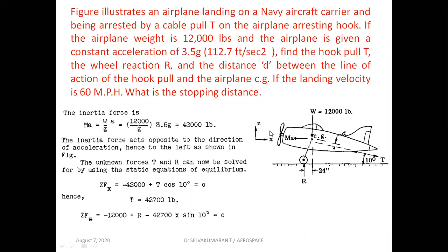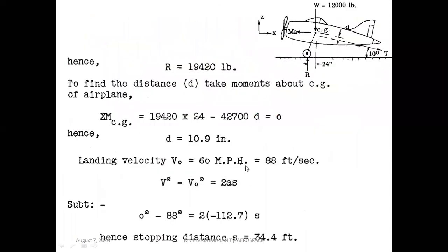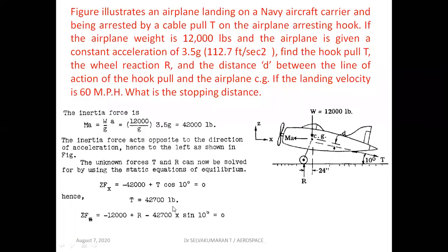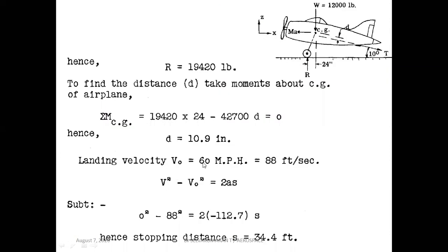Now resolving along the vertical axis (Z axis): 12,000 acting downward, plus R the wheel reaction acting upward, minus T sin 10° acting downward, all equal to 0. From that expression, R is equal to 19,420 pounds.